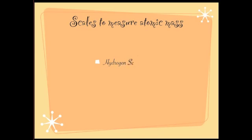The three scales are: the hydrogen scale, in which hydrogen is the standard element; the oxygen scale; and the carbon scale. Depending on the standard elements, we have these three different scales. We are going to see how each scale works and what formula is used.